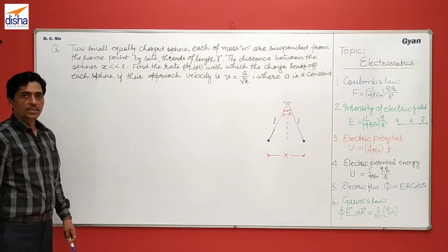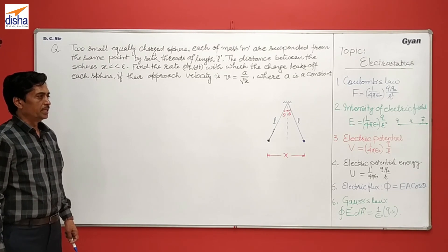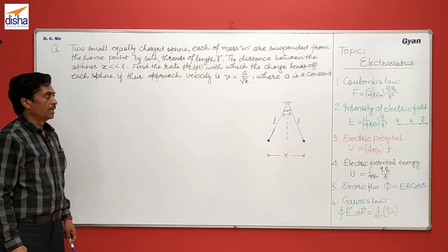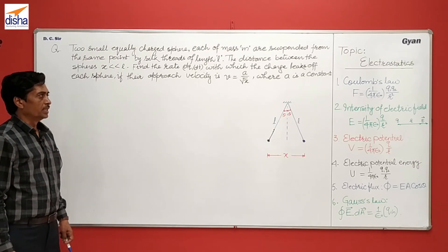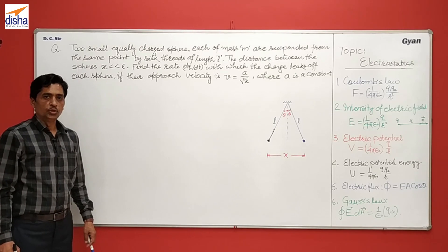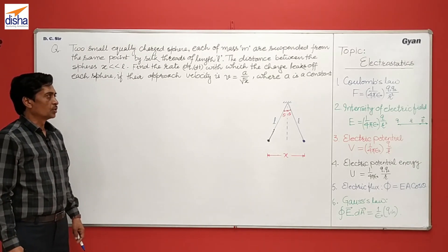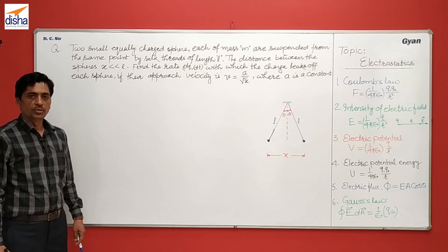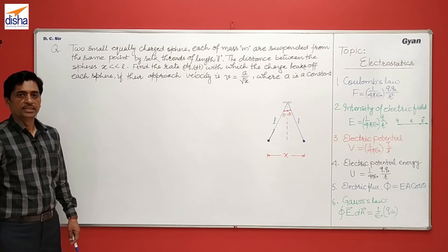The problem is: two small equally charged spheres, each of charge q and mass m, are suspended from the same point by silk threads of length L. The distance between them, x, is very much smaller than L. Find the rate dq/dt at which the charge leaks off each sphere if their approach velocity v is equal to a upon root x, where a is a constant.